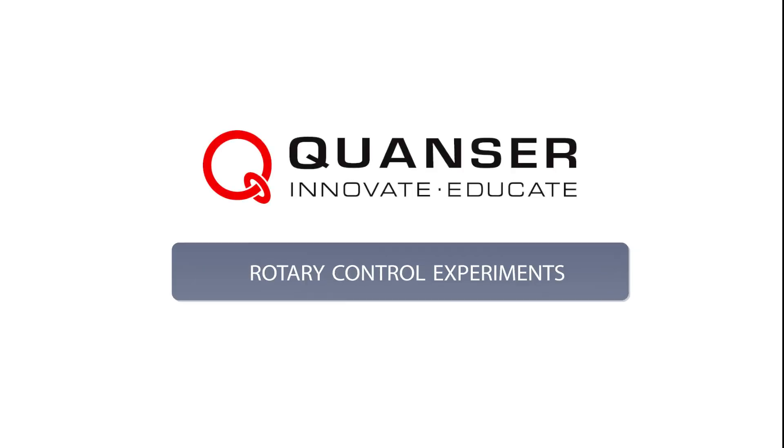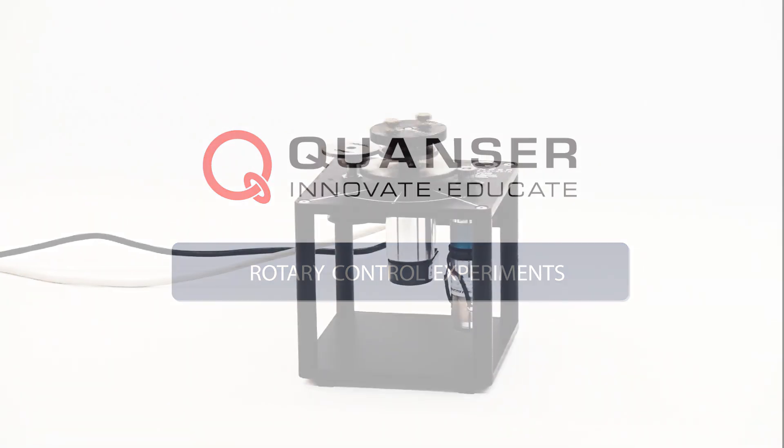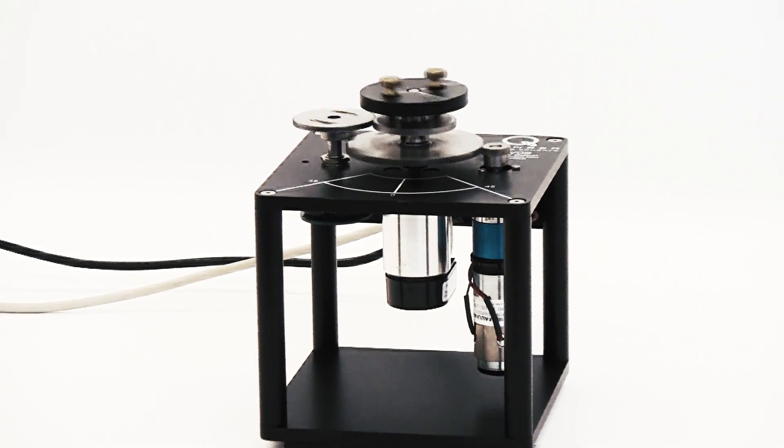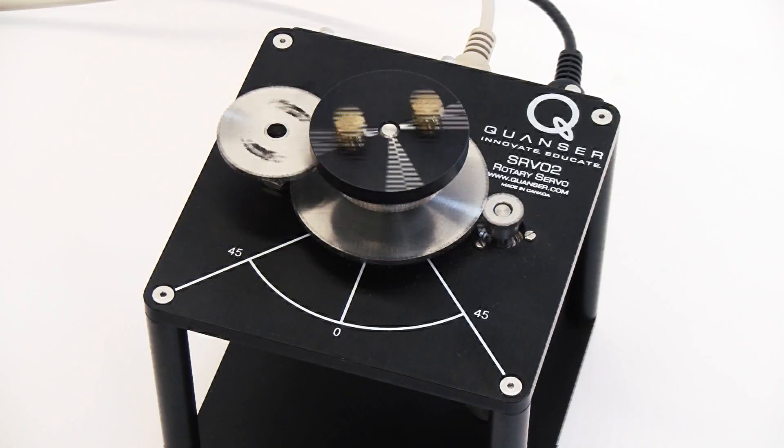Quanser Rotary Control Experiments are designed for controls teaching and research. The experimental plants are based on the Rotary Servo Base Unit, or SRV-02.